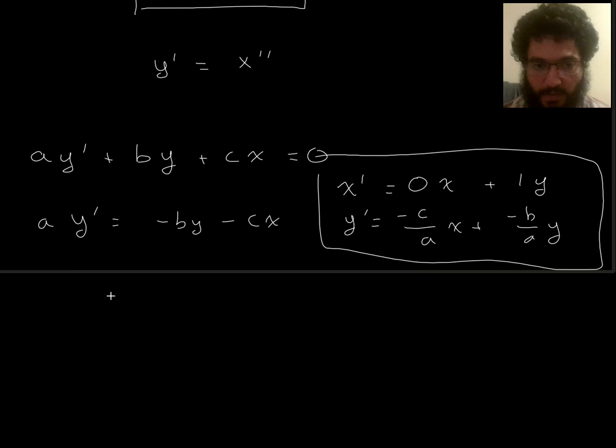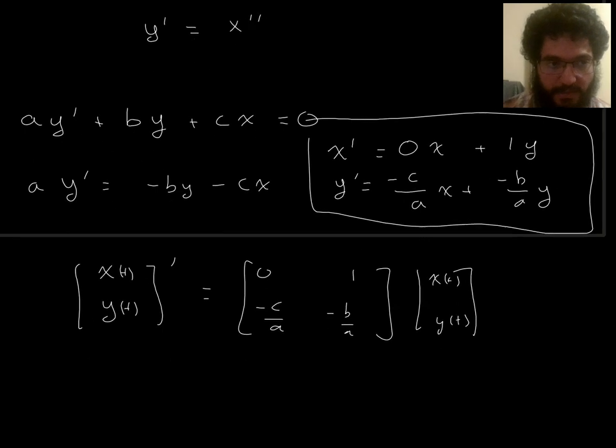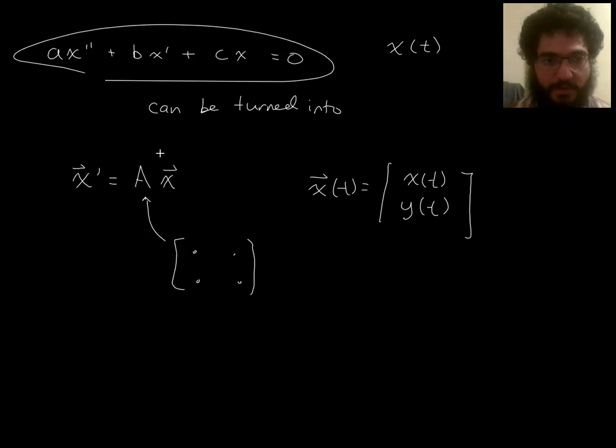Here's another way of writing it. We could write it as x, y, of course these are functions of t, I just usually don't write that, prime equals, and then this matrix, 0, 1, negative c over a, negative b over a, applied to x, y. Or, if I allow myself to use x with a vector symbol, to stand for x of t, y of t, packaged together like this, then a short way of writing this is x with a vector symbol prime equals this matrix times x. So you see we have converted one of these into one of these.